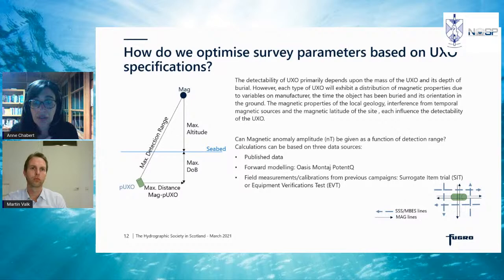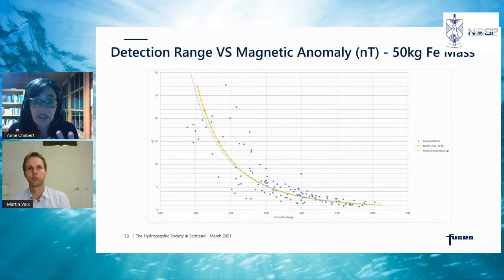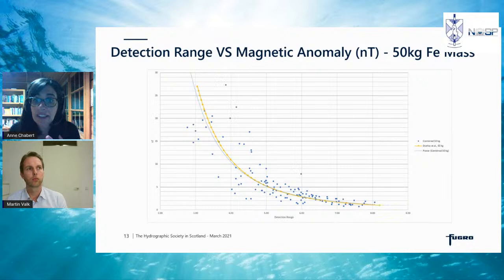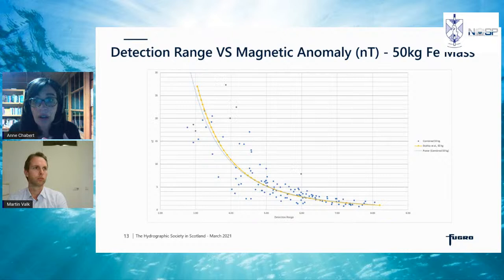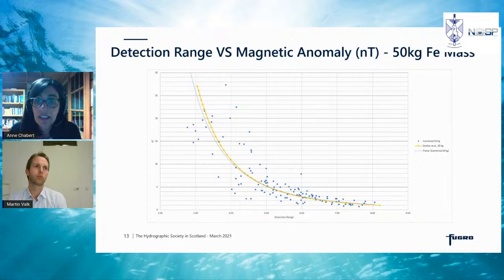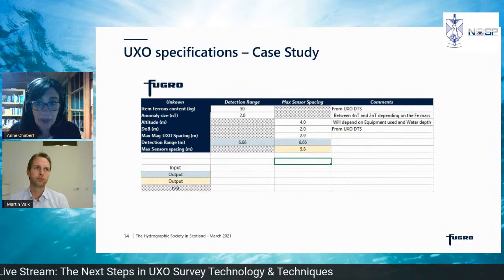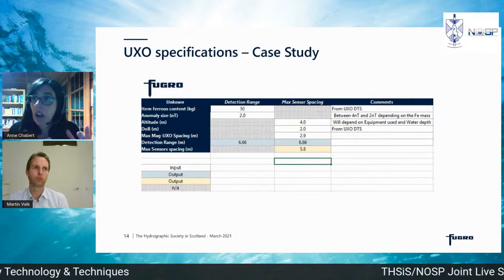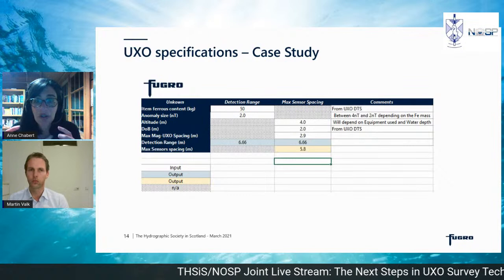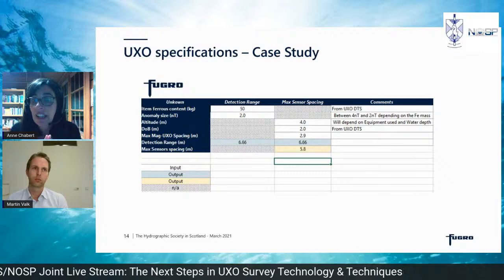One of the big questions we have is how to optimize survey parameters and define our line spacing, because line spacing drives schedule and budget. There's no linear relationship between magnetic anomaly and detection range — many variables affect the magnetic response of a buried UXO. We looked at published land data, forward modelling, and also our extensive internal dataset from calibration on known targets and surrogate item trials. We combined all this data to derive a relationship between detection range and nanotesla value for — for example — a 50 kilogram ferrous mass, finding a strong correlation between published data and our available data. This allows us to define maximum sensor spacing and best baseline spacing.